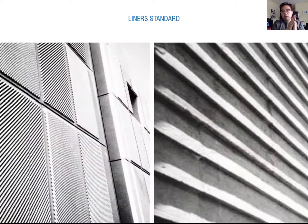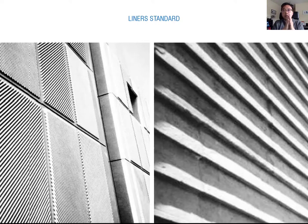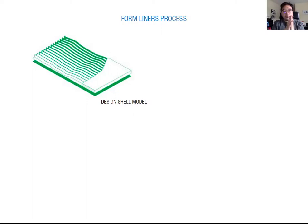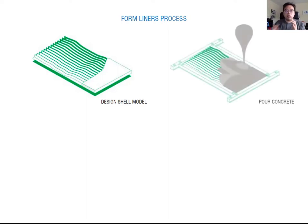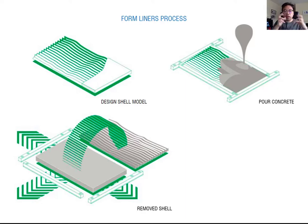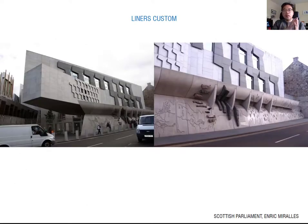Next is the patterned precast concrete — it is more three-dimensional with a little bit more depth compared to the previous one. The process is similar: you place a designed shell mold that has some three-dimensional depth pattern, then pour the concrete, vibrate inside and outside to fill the shell, and you get the desired concrete pattern. This method allows you to get a lot of customized patterns — you can design whatever you want. This is the liner technique for making a unique concrete finish.